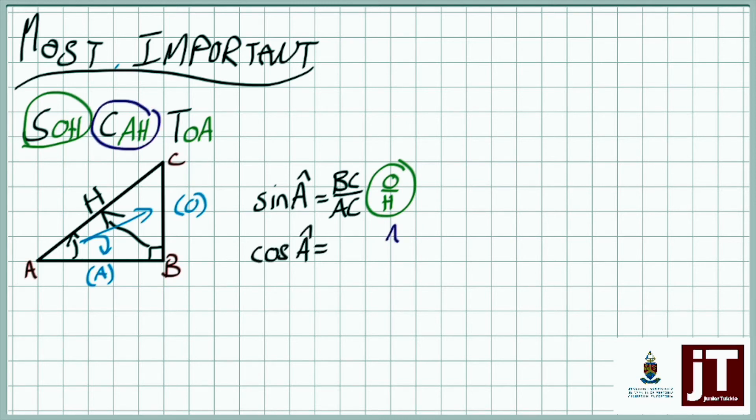What about cosine of angle A? Well that's adjacent over hypotenuse and that is going to be the ratio that exists between AB over AC. Simple and easy as that.